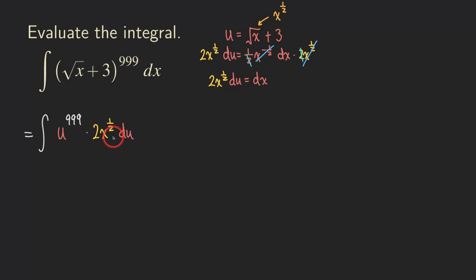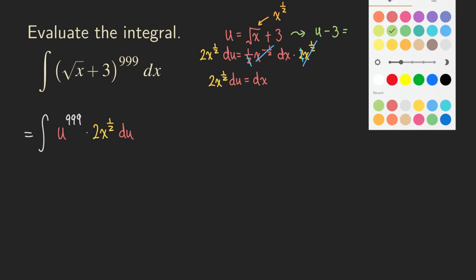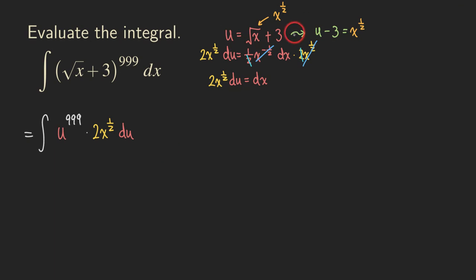We now have an integral with two different variables, and we need to integrate with respect to u. So we need to turn x to the one-half into something. From the original substitution u = √x + 3, we can solve for x to the one-half. Subtracting 3 from both sides gives us x to the one-half equals u minus 3.